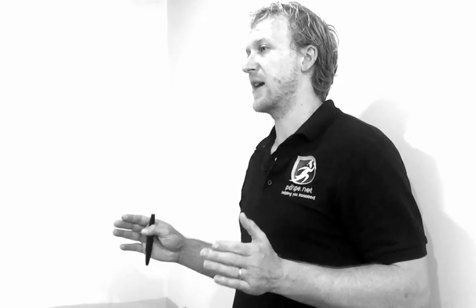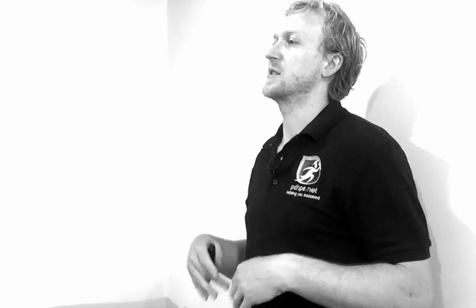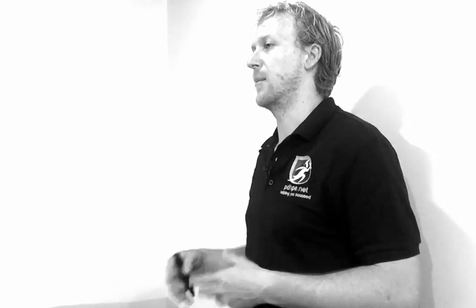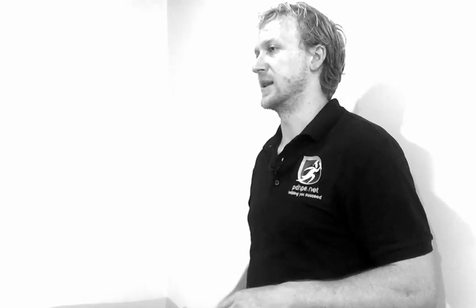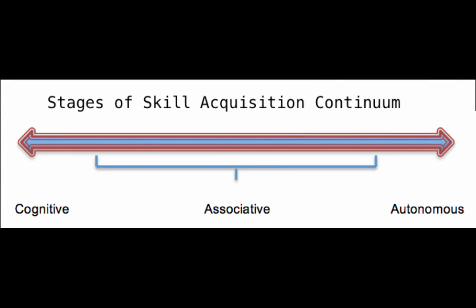The associative stage lasts a very long time. Some athletes will never actually progress out of the associative stage into the autonomous stage — they stay in the associative stage, constantly practicing, but never become automatic where they can start to think about other aspects of performance simultaneously.